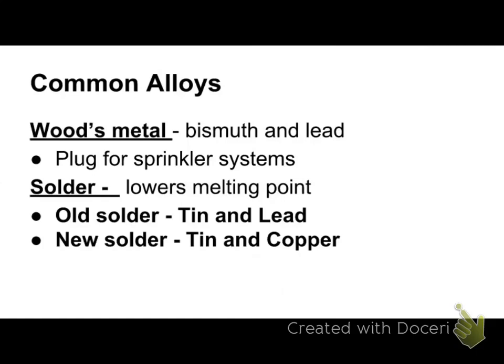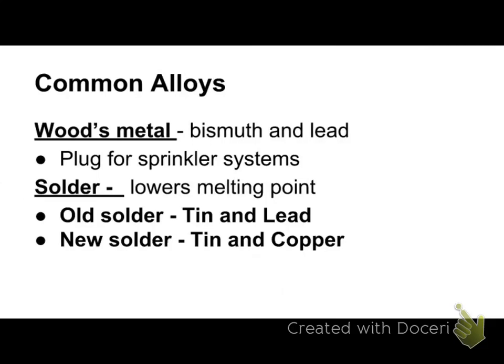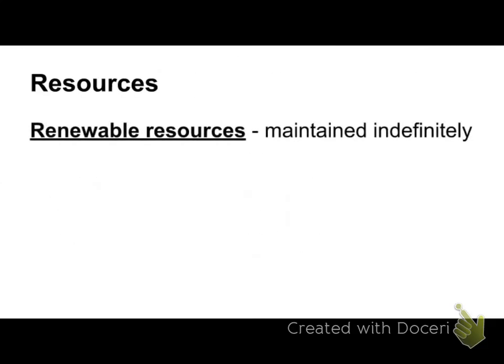A renewable resource would be, for example, plants that grow every year, like in Nebraska — huge to our economy. Renewable resources are maintained indefinitely if used wisely. Forests in Oregon and Washington can be over-logged, so they regulate cutting, taking trees from different areas and replanting so that over the next 80 years they can return for those resources.